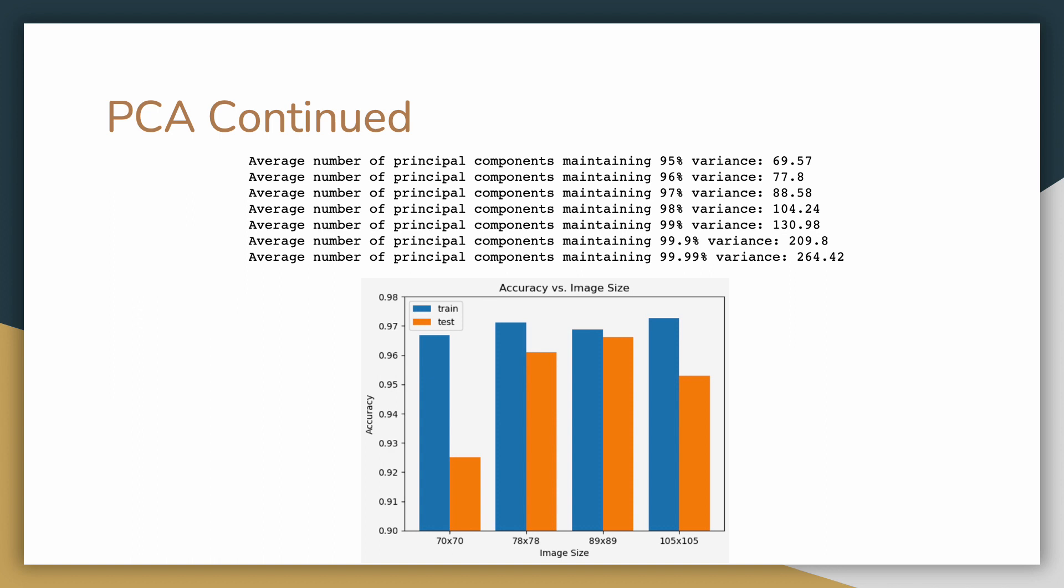Though images with 89 dimensions had the highest testing accuracy, training that model took significantly longer. Therefore, the optimal number of principal components is 78, which maintains an average of 96% variance. We decided to move forward with images compressed to 78 by 78 pixels.